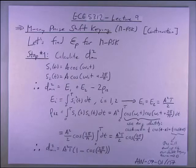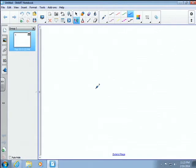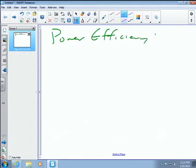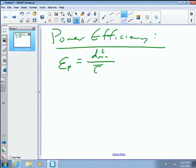So we must keep in mind when we're calculating power efficiency the same sort of equations that we use again and again in this course. To calculate the power efficiency, epsilon P is equal to D min squared divided by EB bar.